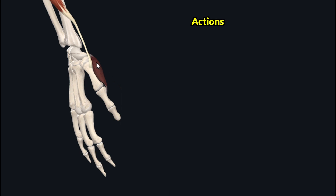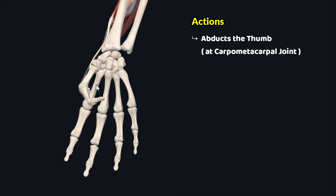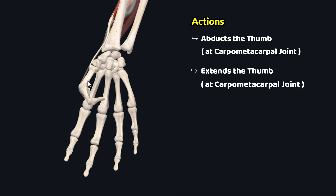This muscle produces two important movements at the carpometacarpal joint. The first movement is clear from the name — abductor pollicis — meaning this muscle abducts the thumb at the carpometacarpal joint. The second movement this muscle produces is extension of the thumb at the carpometacarpal joint.